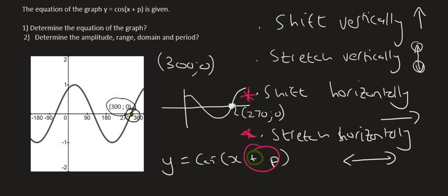So if you move a graph 30 degrees to the right, then that means it would have to be something like that. So p is minus 30. And so that is the final equation of that graph.